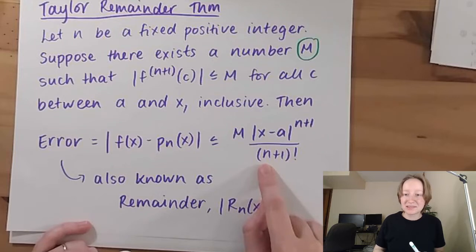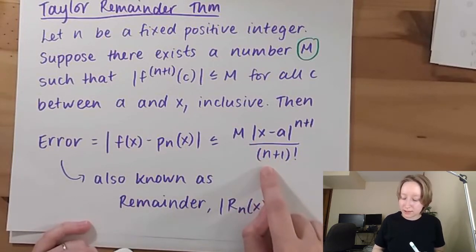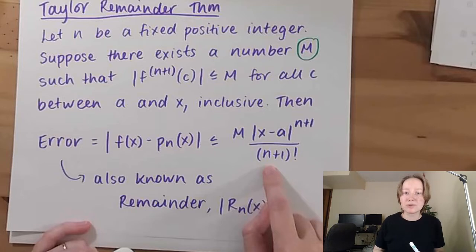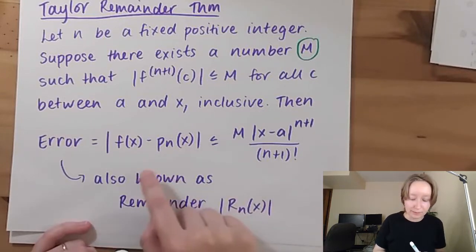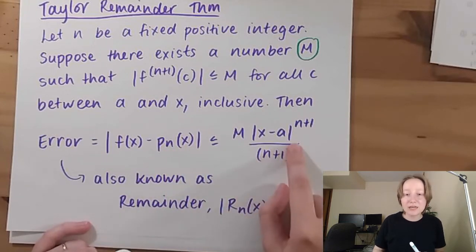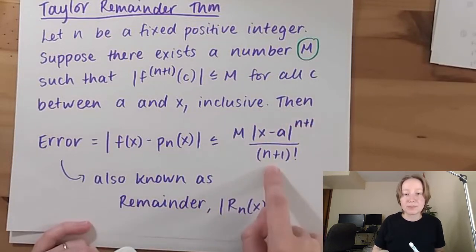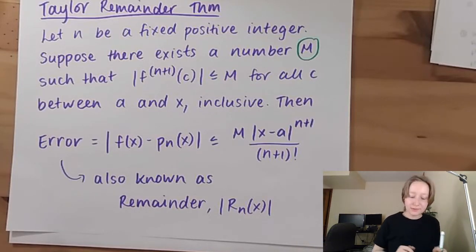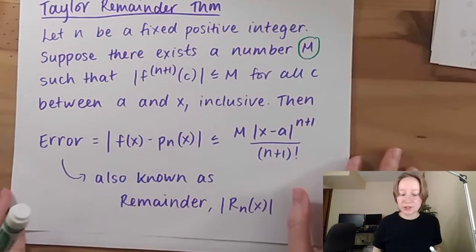So we have a couple of dependencies here: a dependency on x and a dependency on n. Similar to the alternating series, this is the first term in our polynomial that we're throwing out, because our Taylor polynomial goes up to order x to the n. So the next term that I'm throwing out is the n+1 term. This error is also known as the remainder, and you will see those terms used interchangeably.